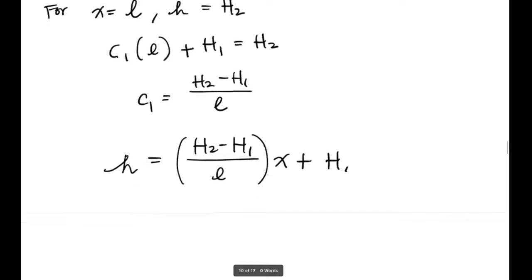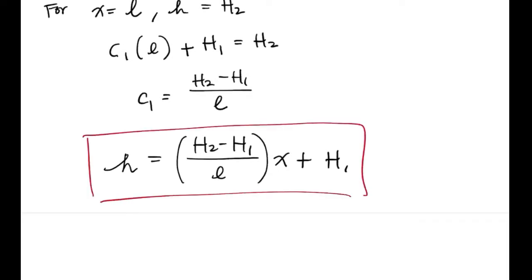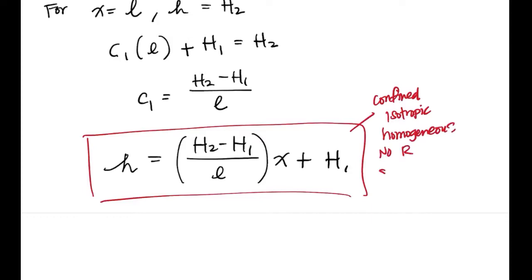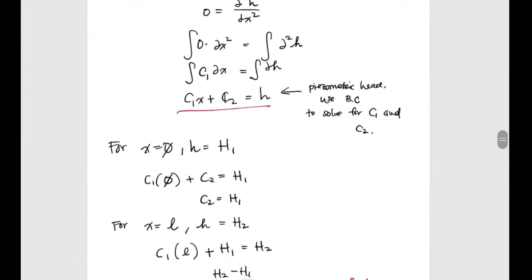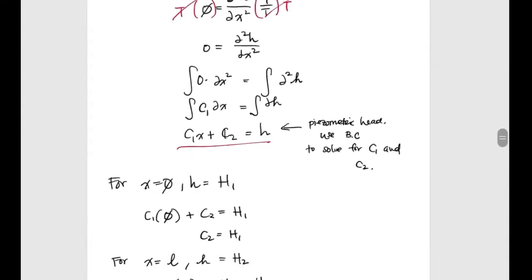So H = [(H2 − H1)/L]·X + H1 is your solution for a confined, isotropic, homogeneous aquifer with no recharge and steady state conditions. If you had a recharge term, that would be included on the left-hand side of the equation — you'd have an extra R·X or R·X² term on that side.